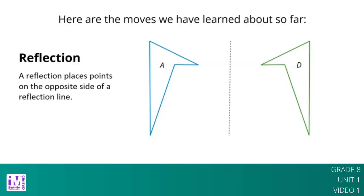We use the word image to describe the new figure created by moving the original figure. Here, figure A is the original, while figure D is the image. If one point on the original figure moves to another point on the new figure, we call them corresponding points. Figures A and D have many pairs of corresponding points. Here are three of them.